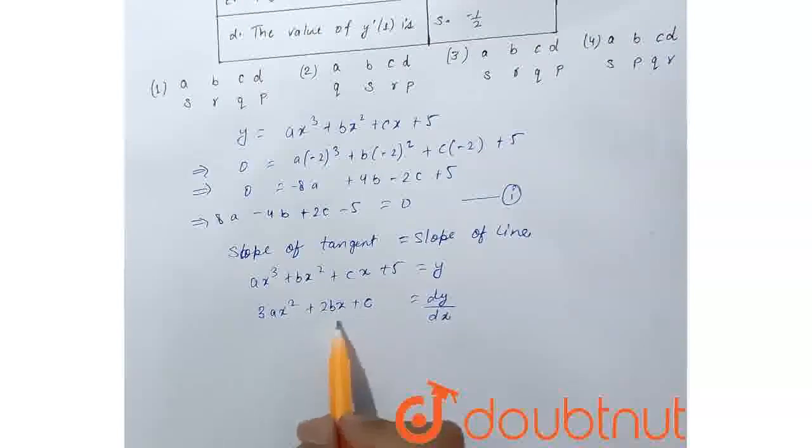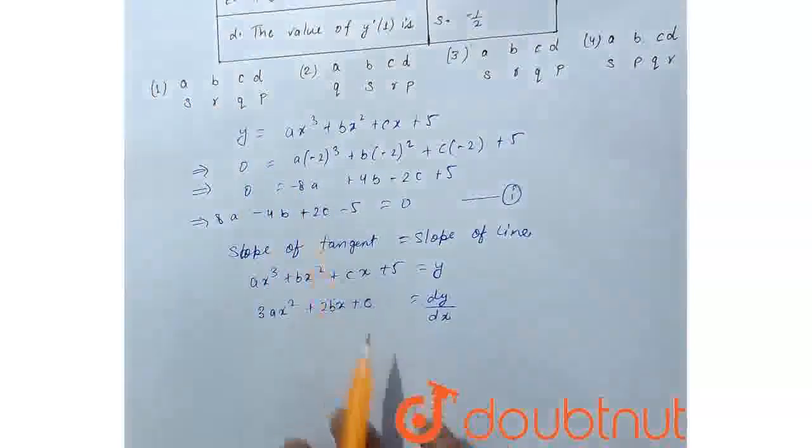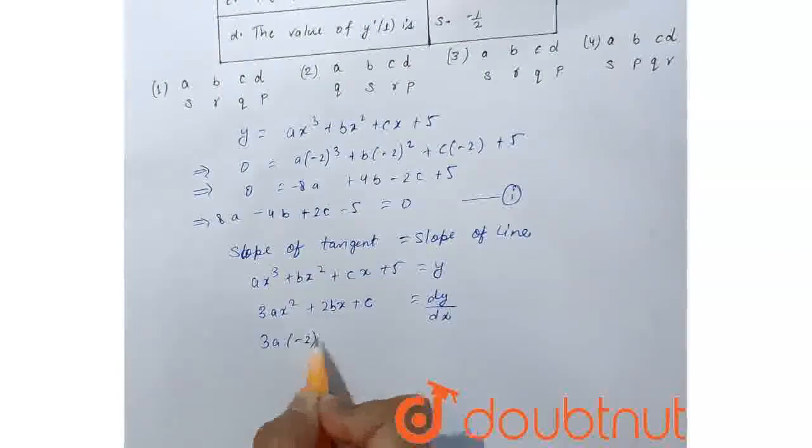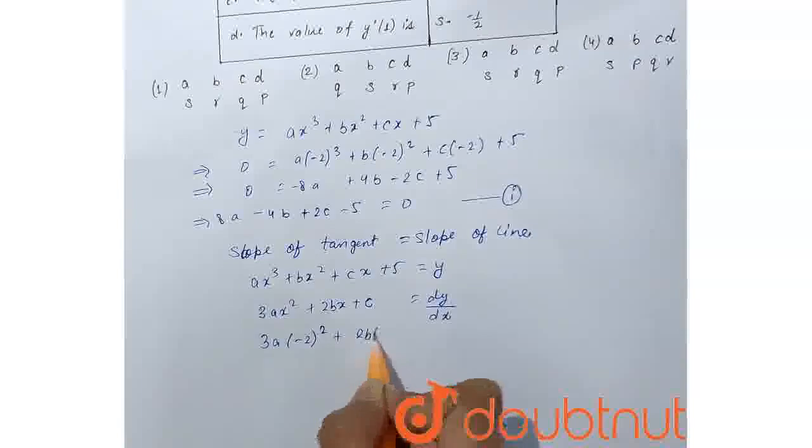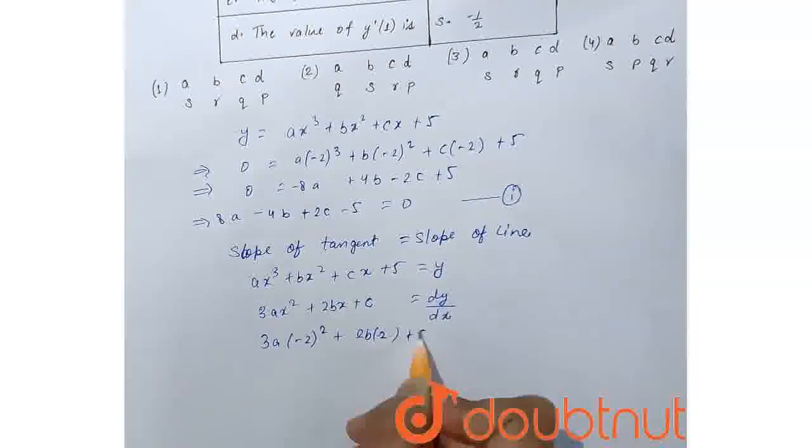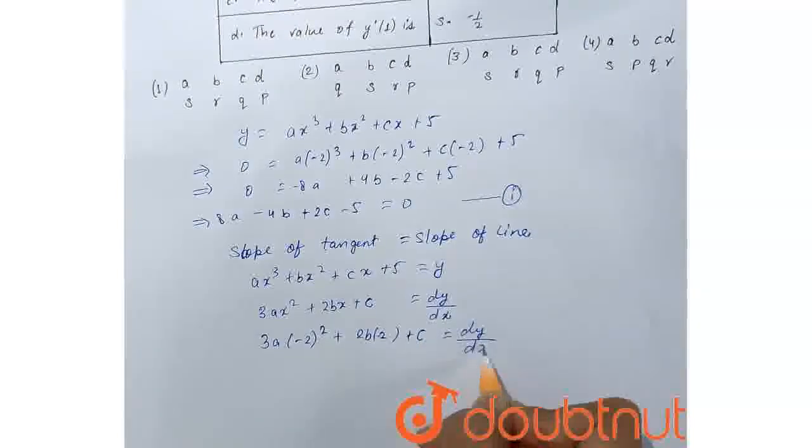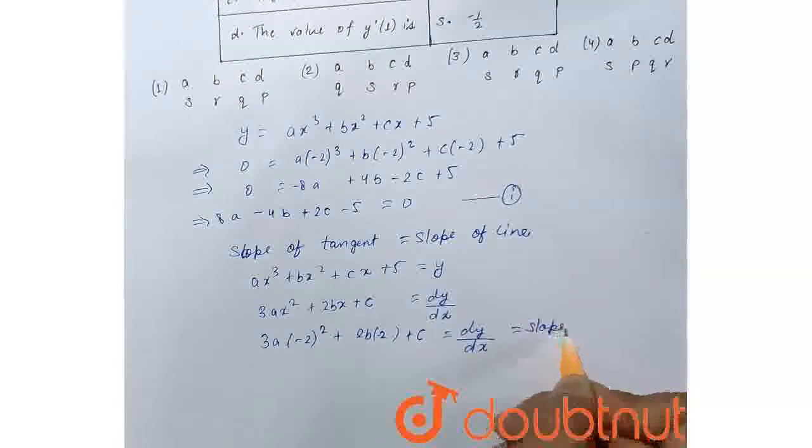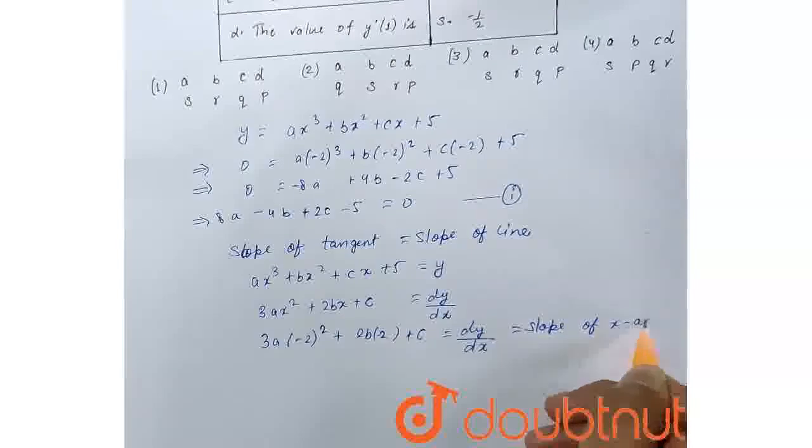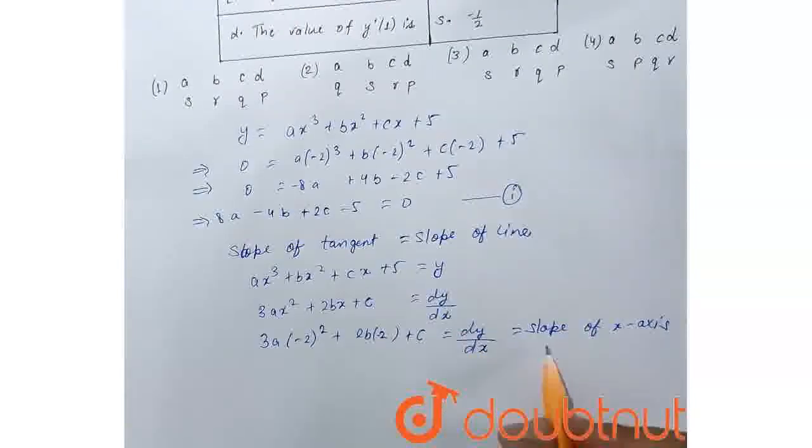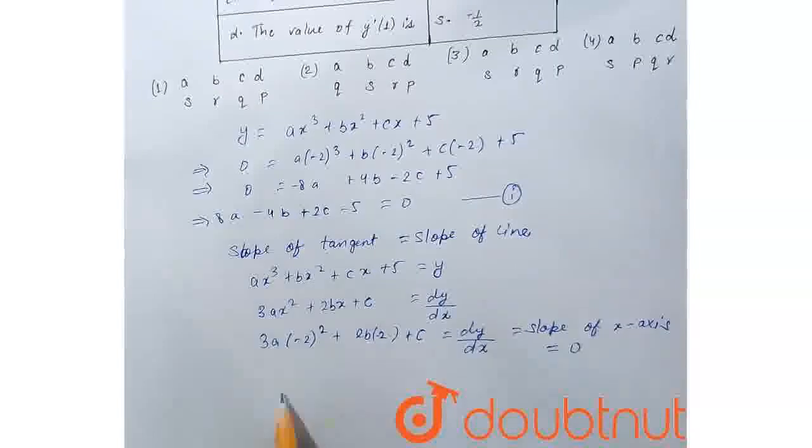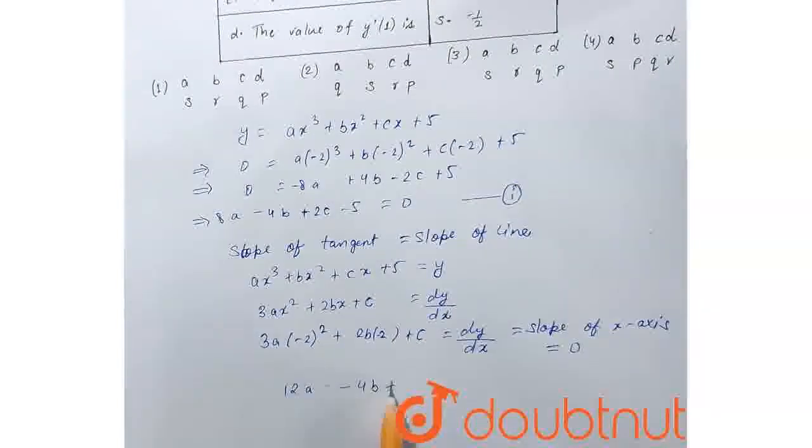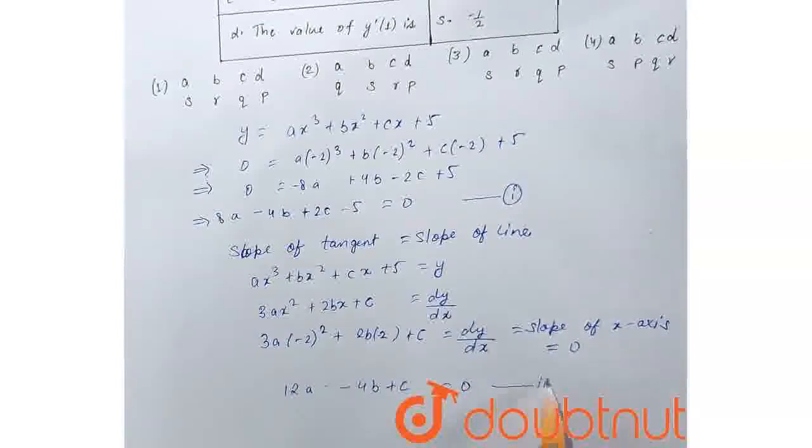So, the slope of x-axis equals the slope of x-axis as it touches. The x-axis slope is equal to 0. So, it will be 12a minus 4b plus c equals 0. This is equation 2.